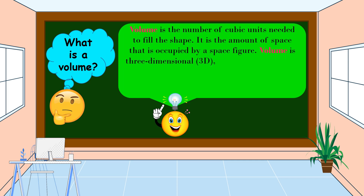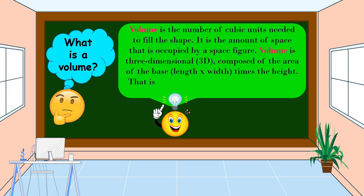Volume is three-dimensional or 3D, composed of the area of the base which is length times width times the height. That is why it is always in cubic units like cubic millimeters, cubic centimeters, cubic meters, and so on.